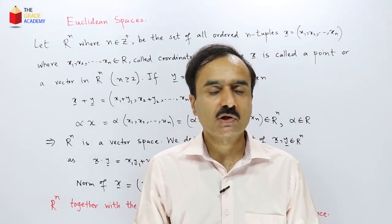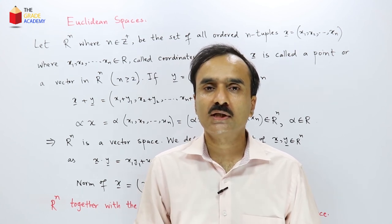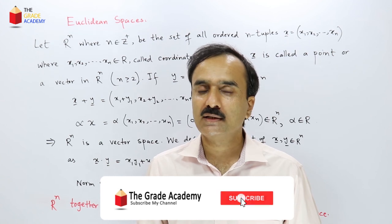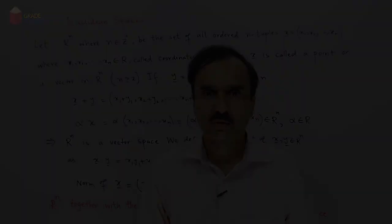So what are the examples of Euclidean space? R, R2, R3, R4 up to Rn. So these are all Euclidean spaces. Thank you.